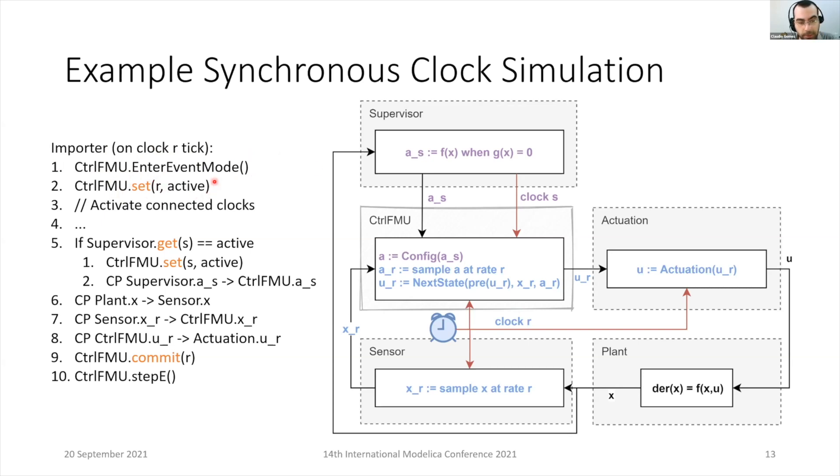Other clocks connected to R are activated as next step. Then we always need to check, because this is an output trigger clock. We never know when it is going to tick. We check whether this clock is active, has been ticking.